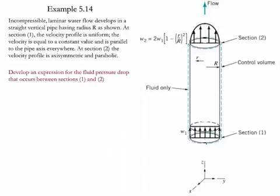Example 5.14. In this example we have an incompressible laminar water flow developing in a straight vertical pipe having a radius R as shown.